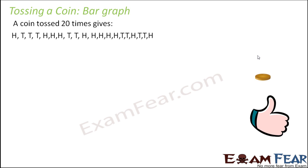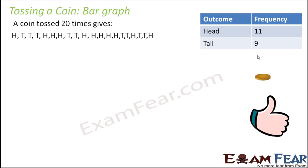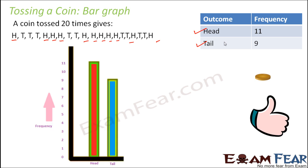So can you draw a bar graph out of these? First of all, we represent this data in tabular form. The possible outcomes are head and tail. Counting through the results, you got head 11 times and tail 9 times. So 11 and 9 are the frequencies of head and tail respectively, because head occurs 11 times. So 11 is the frequency. Now that you have this table, it is very easy to draw a bar graph.